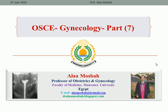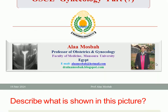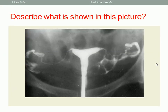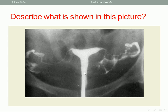You can see other parts in my YouTube channel. Let's start with the first slide here. Describe what is shown in this picture. As you see in this picture, this is Hysterosalpingography, and the cervix is seen, the uterine cavity, plus fallopian tubes, and the spillage of the dye in the pelvis. And the Hysterosalpingogram cannula is in place.